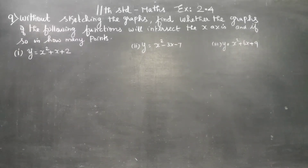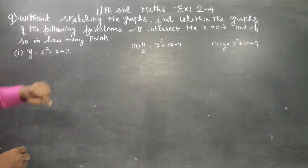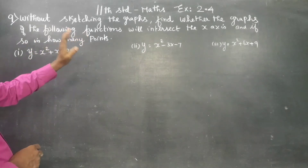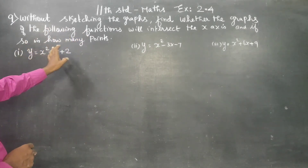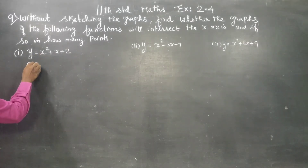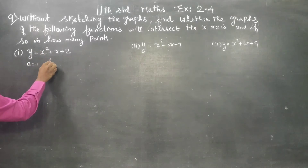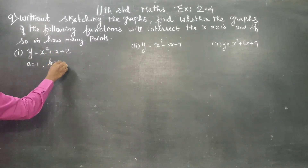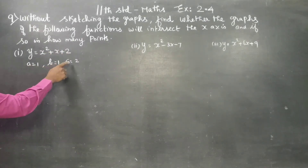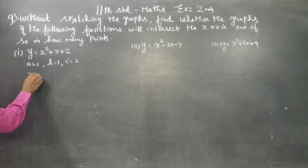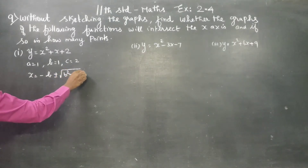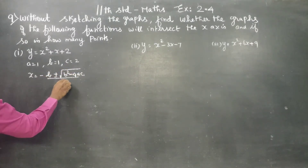Without sketching the graph, find whether the graph of the function will intersect the x-axis and if so, in how many points. For the first function, a is equal to 1, b is equal to 1, c is equal to 2. Using the formula method, x is equal to minus b plus or minus square root of b squared minus 4ac, divided by 2a.